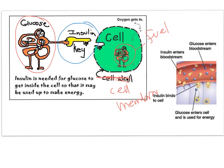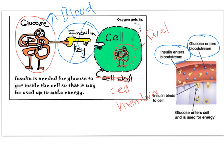Glucose actually needs insulin as the key. Insulin is the hormone that allows glucose to get into the cell. Without insulin, glucose would just build up in the blood at higher and higher levels. When glucose is in the bloodstream, insulin is also released, and it binds to the cell like a key to allow glucose in, where it is then used as fuel to make ATP.